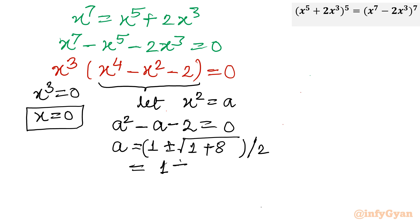So a = (1 + 3)/2 = 4/2 = 2, or a = (1 - 3)/2 = -2/2 = -1.